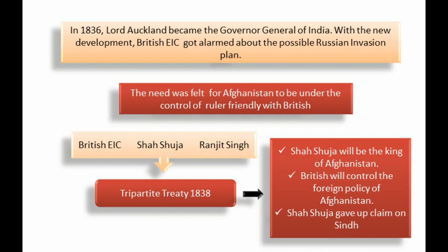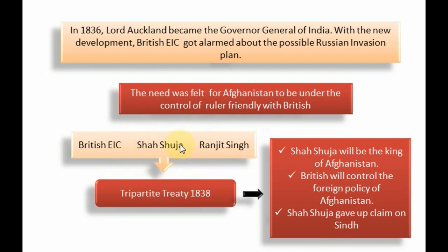When Dost Mohammad did not agree to their terms, they now wanted to remove Dost Mohammad and install Shah Shuja as the ruler of Afghanistan so that he could serve their interests in the future. Shah Shuja had previously been the ruler of Afghanistan until around 1809, after which he had been deposed and the British were giving him a pension. The British were looking for a pretext to attack Dost Mohammad, and they used Shah Shuja as that excuse, saying they wanted to make him the ruler.